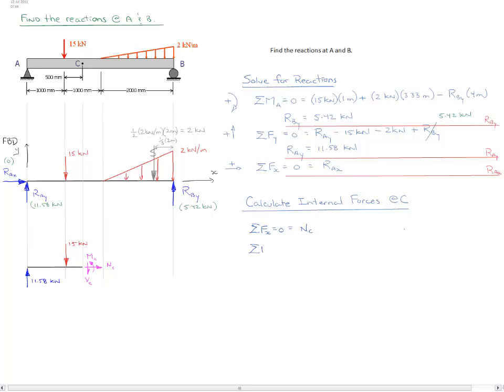We can then apply the sum of the forces in the y direction, set it equal to zero. And we have, I'll do again positive up, 11.58 kilonewtons which is our reaction at A, less 15 kilonewtons which is the point load.